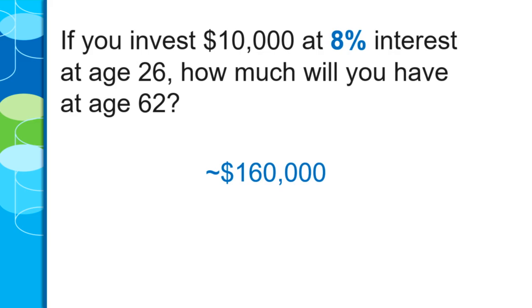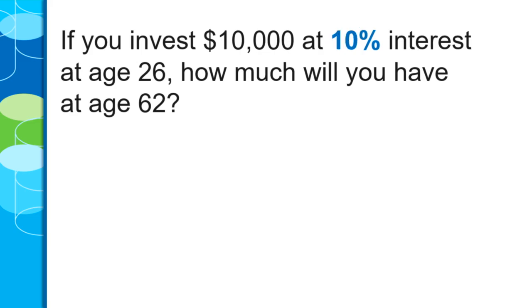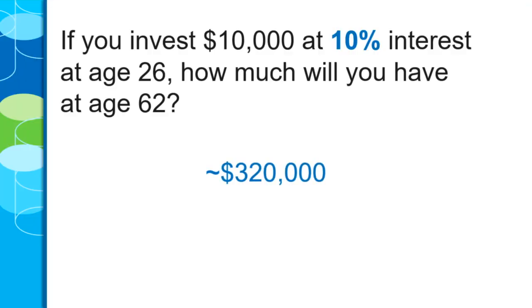What if we go to 10% interest? Rule of 72 divided by 10 gives us a little over 7 years per doubling. In 36 years, 7 times 5 is 35, so that fraction gives us just about 5 doubling periods. We just did 3 doublings to reach $80,000, then added a fourth to get $160,000, and now we're at $320,000.